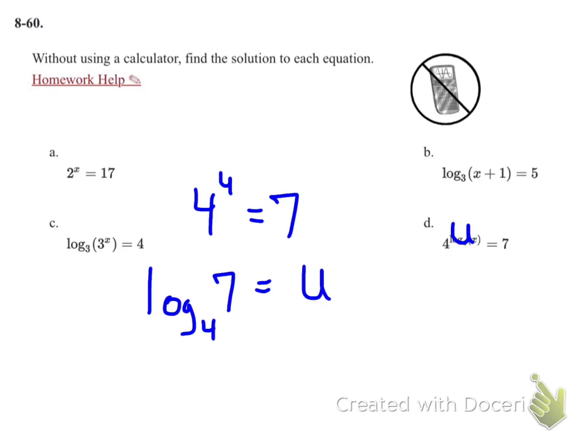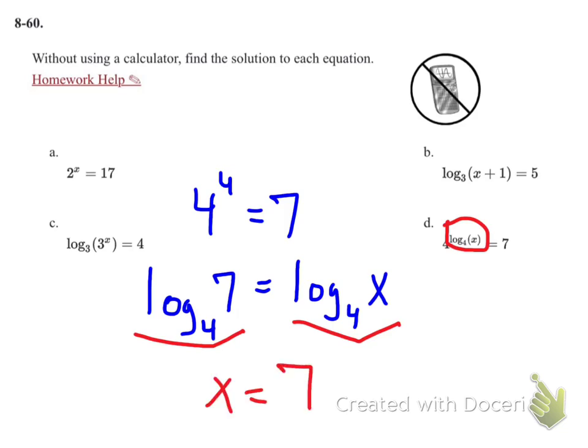But now my u value, I know what that is. It is log base 4 of x. So instead of having this be a u, I'm going to write log base 4 of x. So now I have log base 4 of 7 equals log base 4 of x, therefore x equals 7.